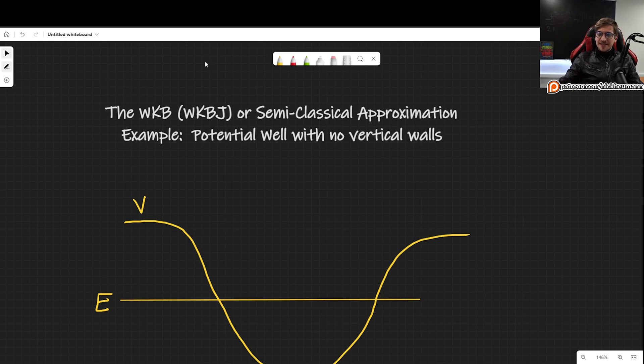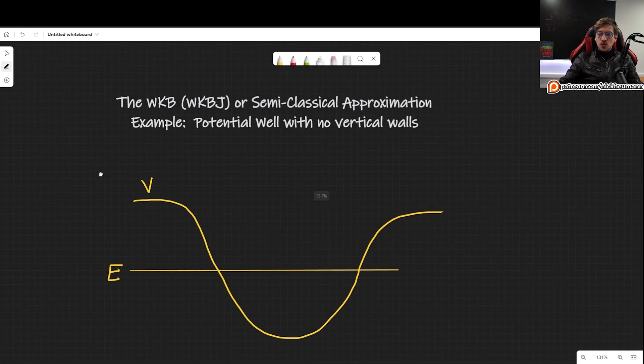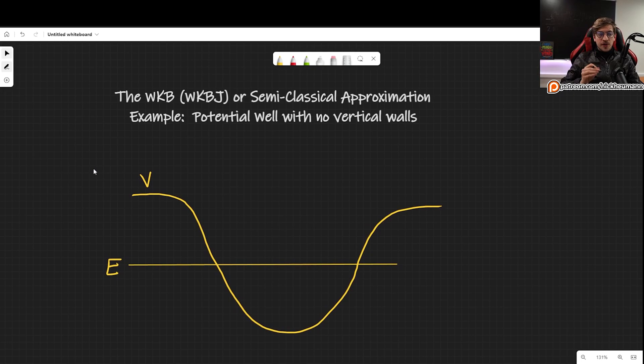This is the example when we have a potential well with no vertical walls. The situation is basically what I'm showing you right here. We have some potential that will be sloping downwards and then will slope up. So we have this well but unlike before we don't have this infinite wall on either side and we don't have just one side sloping up which is something that we have also seen.